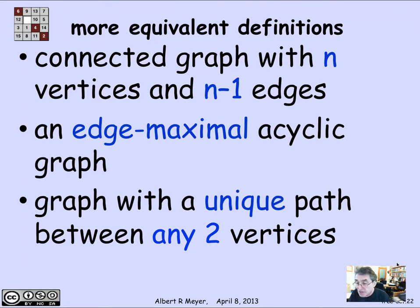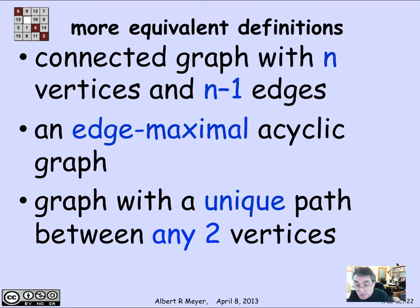And maybe the most useful way is to say that a graph in which there is a unique path between any two vertices is a tree. Of course if there's a unique path, in particular there's a path, so all the vertices have to be connected. But what makes it a tree is that there aren't two different ways to connect between two vertices, because as soon as there were, there would be a cycle. And those are some of the basic ways that trees can be formulated equivalently — there are lots more, but this is enough for today.